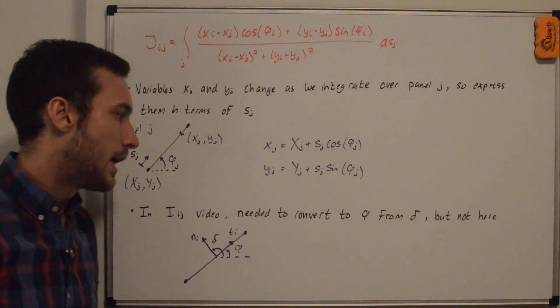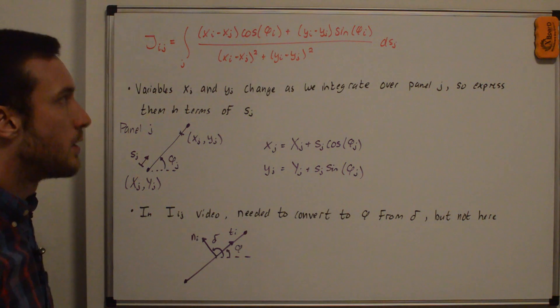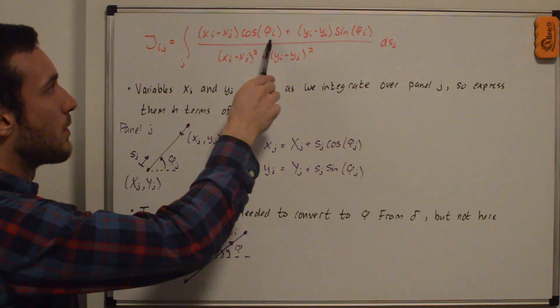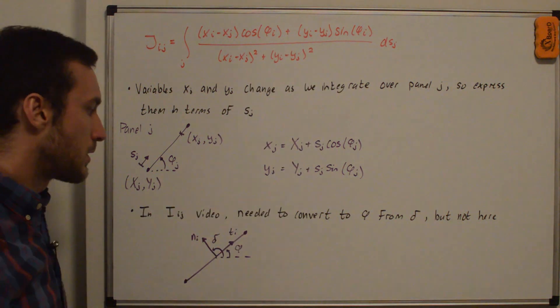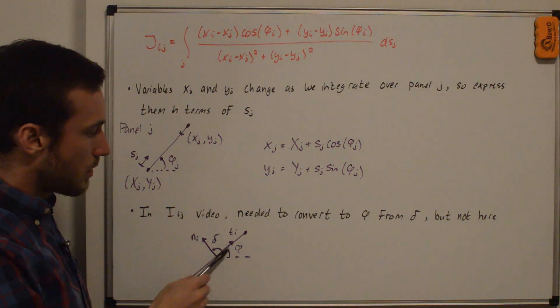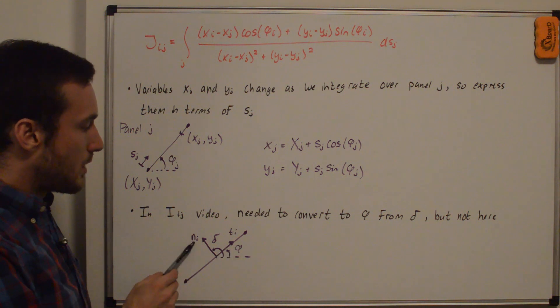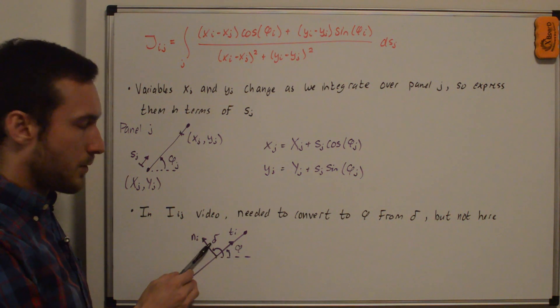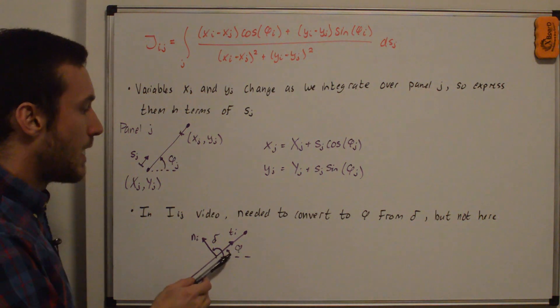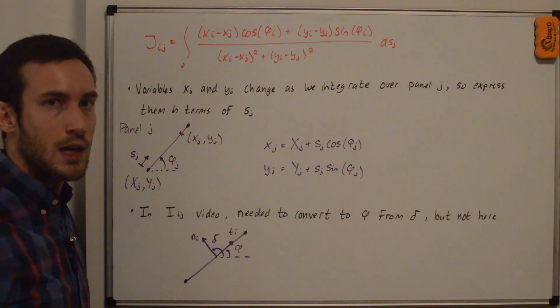So one thing you'll note that we did in the iij video that we don't need to do here is convert these terms up here from delta to phi. So right now they're in terms of phi, but in the iij video they were in terms of delta. And you can see why. Because if I'm looking at a panel right here and the tangent vector's along the panel and the normal is an extra 90 degrees away from that tangent. Well, if you're looking at the angles, the angle from the positive x-axis to the tangent is already phi. But when we did the normal from the positive x-axis to the normal was delta. So we needed to convert from delta to phi. But because we inherently used phi before, we don't need to do that extra conversion.